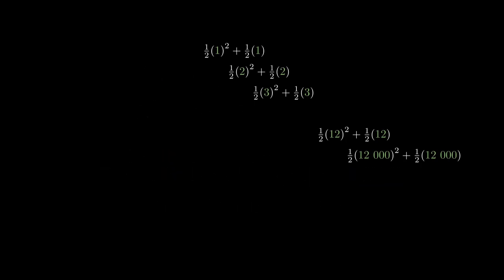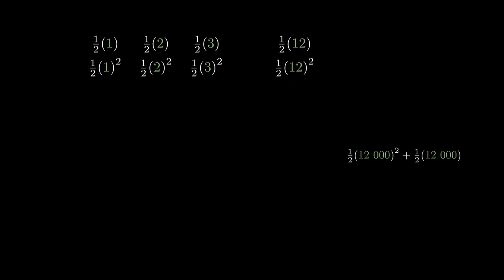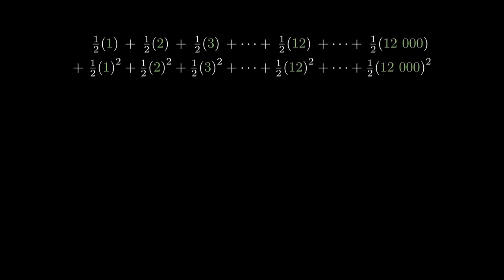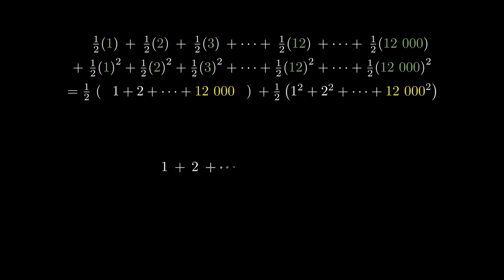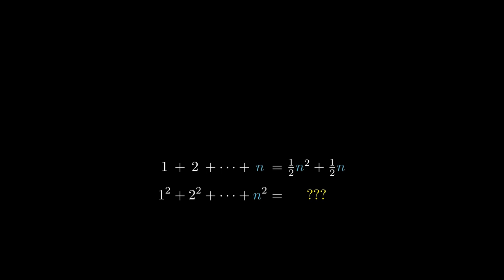All that remains is to add up these terms. For the first row of numbers, we can pull out the common factor of one half. And for the second row of numbers, we can pull out the common factor of one half as well. The first term is half times the sum of the first 12,000 numbers, which is precisely half times 12,000 squared plus half times 12,000. The second term is the sum of the first 12,000 squares, but we don't have a formula for this. Can we try to find such a formula?